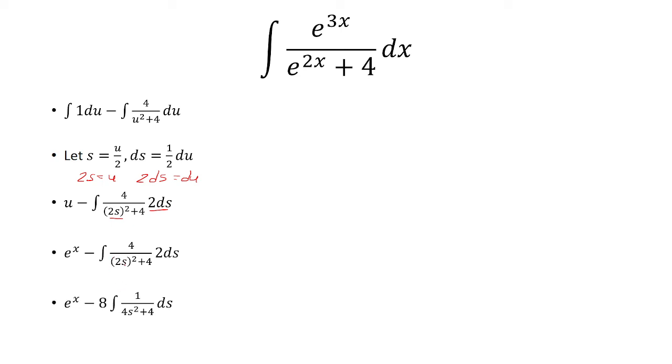So we square the 2s to get 4s squared. And then we have 4 times 2, that's going to be 8. So I brought that outside. We can factor out a 4 in the denominator, and then 8 divided by 4 becomes 2. Now we integrate 1 over s squared plus 1 to get inverse tangent of s.